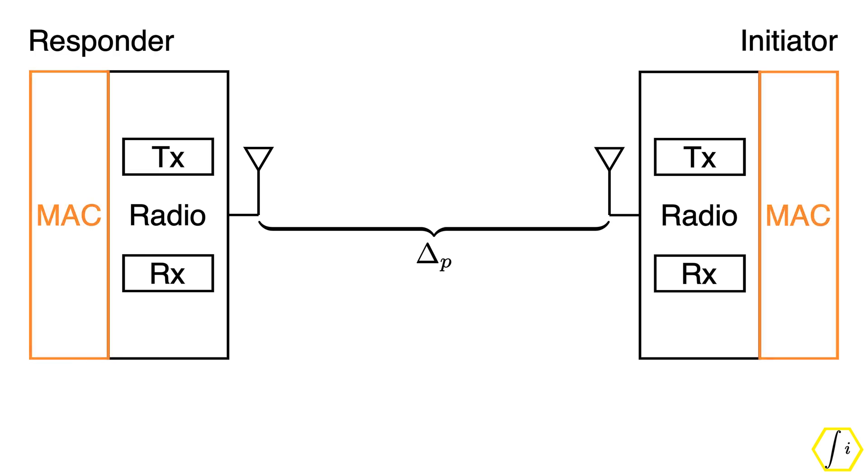The problem is that during the FTM exchanges, the timestamps T1, T2, T3, and T4 are recorded only in the digital MAC layer whereas we should really be recording them at the antennas. The transmitter and receiver circuits inside the radio do contribute some delay, which we call as group delay.